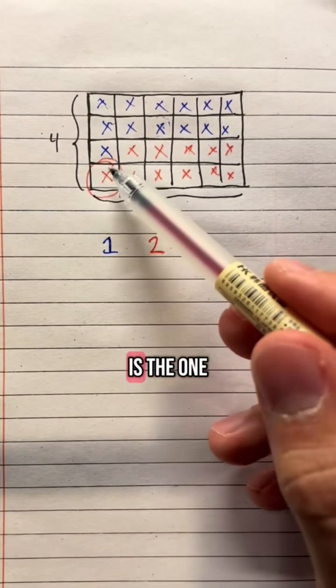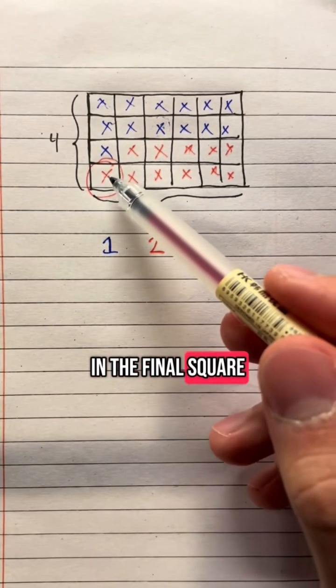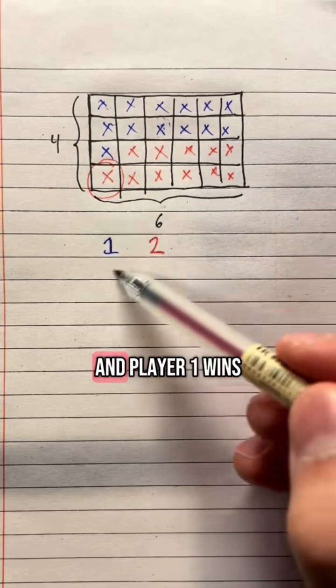So in this case, player two is the one who has to put an X in the final square, which means that player two loses and player one wins.